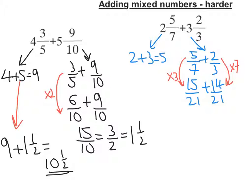Now 15 twenty-firsts plus 14 twenty-firsts is 29 twenty-firsts. Now I can't leave it like that, I need to change it back into a mixed number. Well, 21 twenty-firsts is a whole, so I've got one whole, and that would leave me with 8 left over.